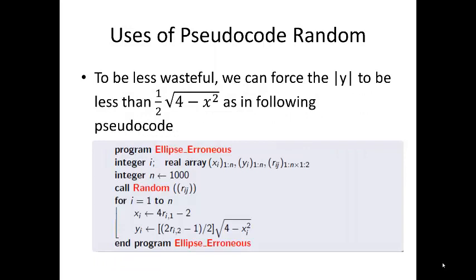To be less wasteful, we might think that we could force the absolute value of Y to be less than 1 half times 4 minus X squared as in the following pseudocode. As the title of this routine indicates, we do get some erroneous results from this routine.